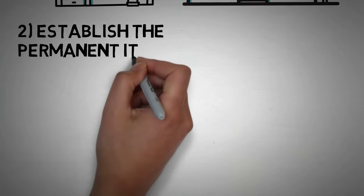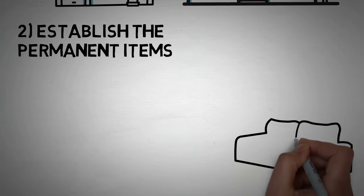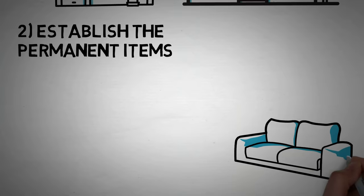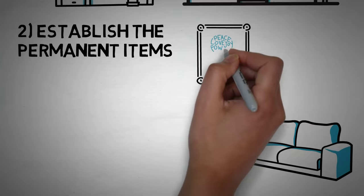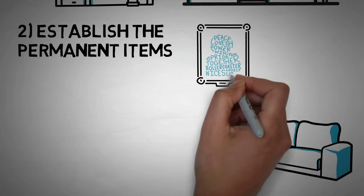Now moving on to step number two, and that's to establish the main items. Now assuming that you are able to walk through your palace in your mind without struggling to recall details, you are ready to start assigning permanent items. You should select four to five items in each room. Optimal items to select are furniture, artwork, windows, decorations, and other prominent features.